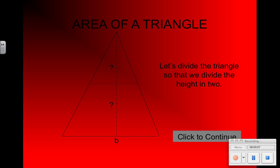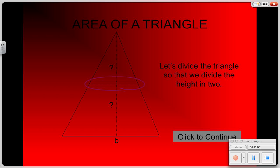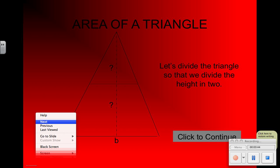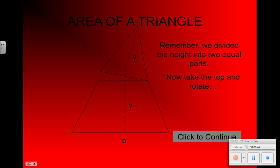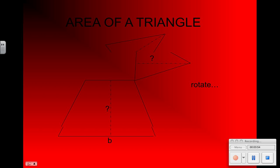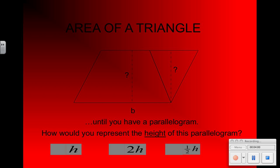If you remember in class, we took our triangle and cut it in half so that we had two parts, then cut off this top point so we divided the triangle in half. We took that top part off and rotated it — continued to rotate it — until it formed a parallelogram. Once again, we represented the height of this parallelogram using the triangle cut in half.